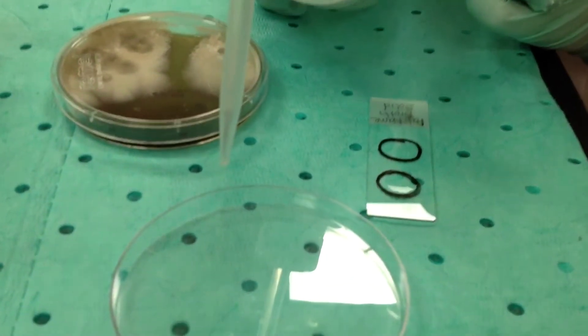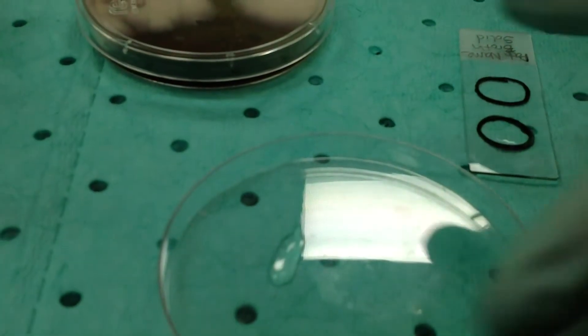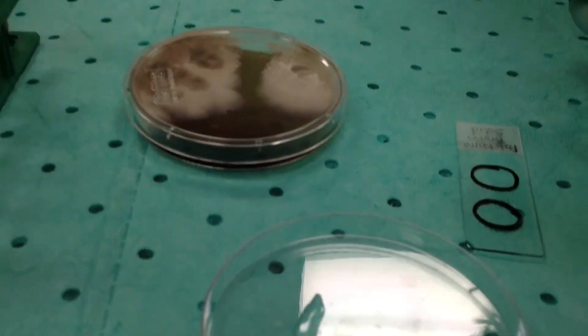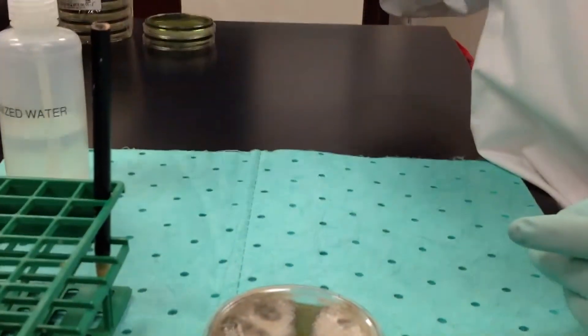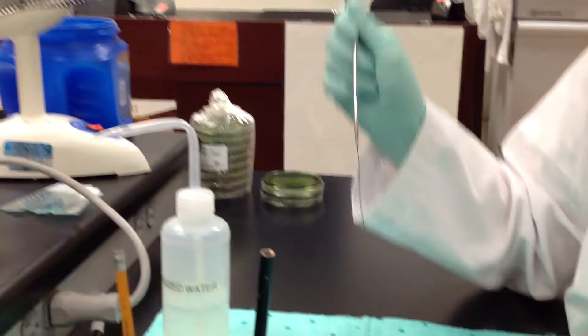So the easiest way is to put a couple of drops in an empty petri dish so you're not putting your loop inside the deionized water and contaminating your water.